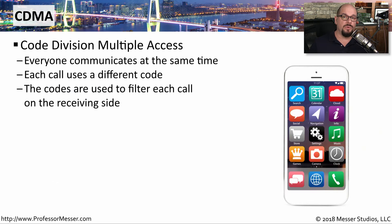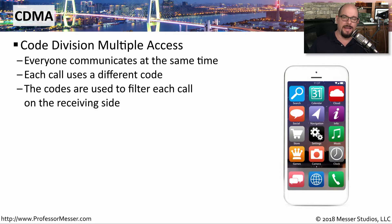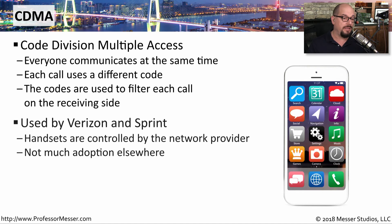The other standard of the time was CDMA, Code Division Multiple Access, which uses a different method of multiplexing this data. With CDMA, everyone is communicating over the same frequencies, but each call is using a different code, and the phone on the other end is filtering out all of the information that it doesn't need to hear. This was a standard commonly used by Verizon and Sprint, and all of those handsets were controlled by that network provider. In the United States, there wasn't much adoption outside of Verizon and Sprint for CDMA.